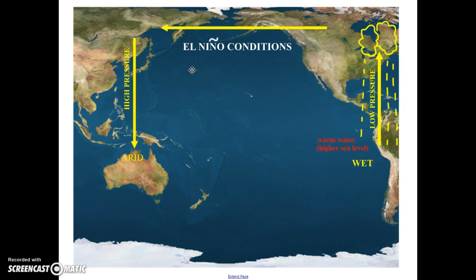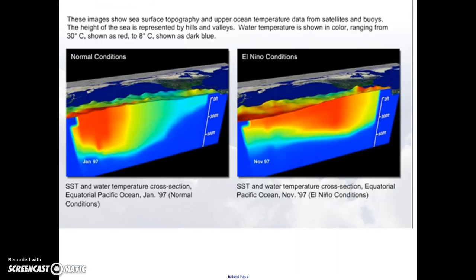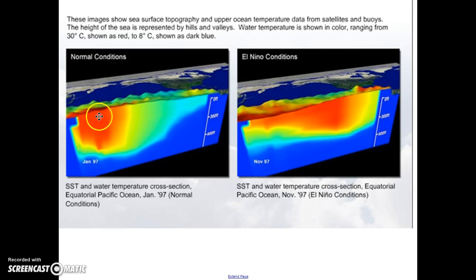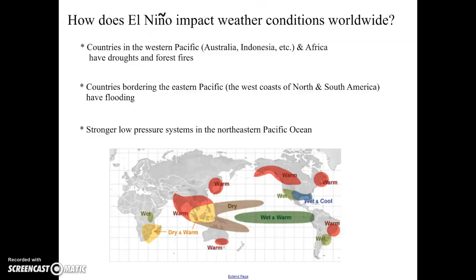El Nino is going to impact the entire planet and weather conditions. These two images show the temperature of the water during normal conditions — normally the warm water gets blown to the western side of the ocean — and during El Nino it moves back and is on the eastern side of the ocean. So let's take a look at how El Nino impacts weather conditions around the world.